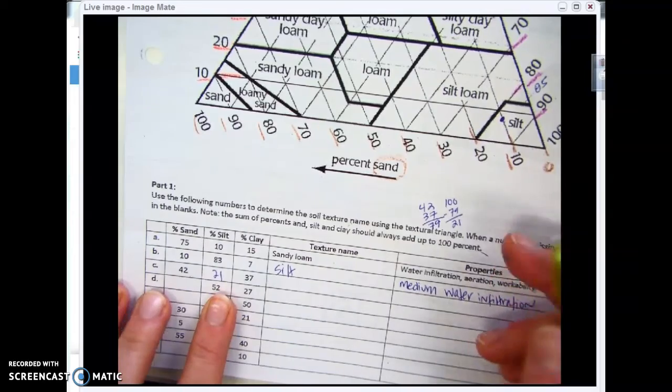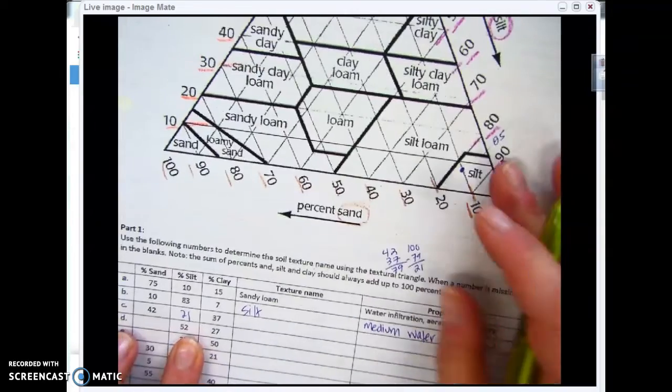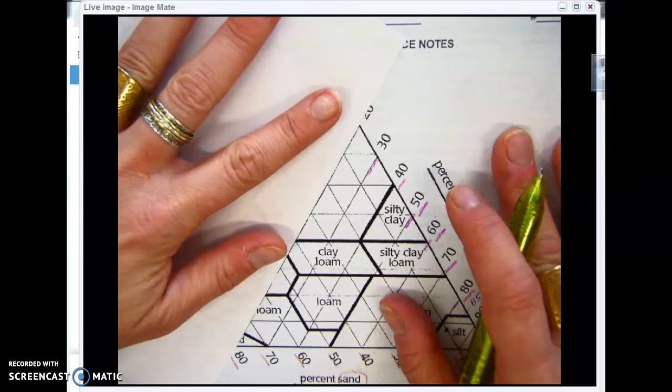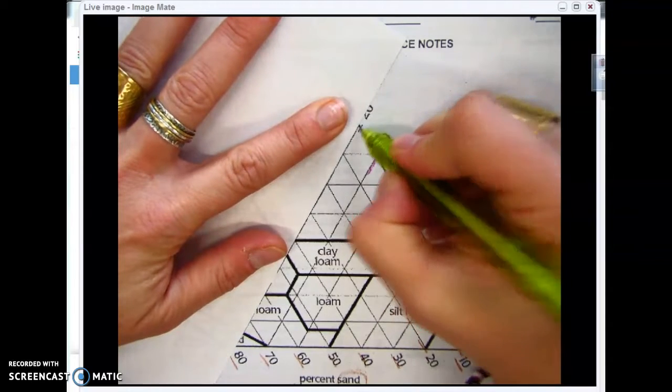I'm going to try a different one. I'm going to start with silt: 21% silt. I'm going to take that here. Know that that's the 20 line. My 21 is going to be right in here.